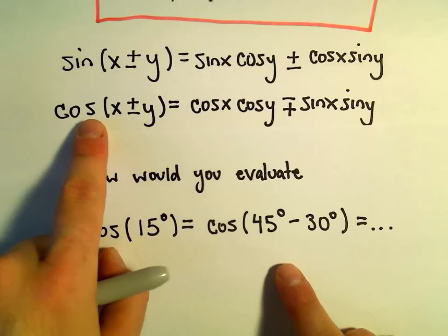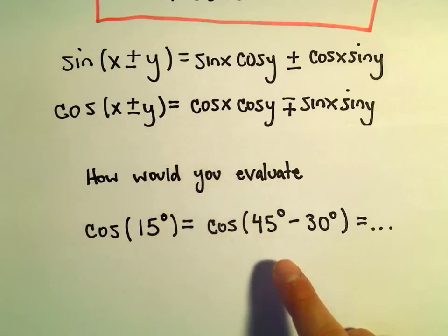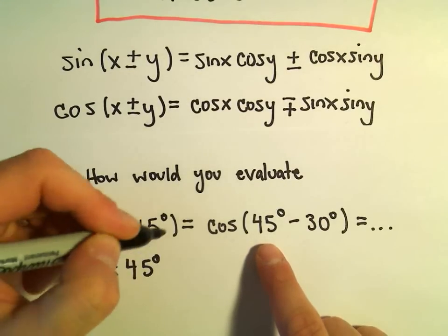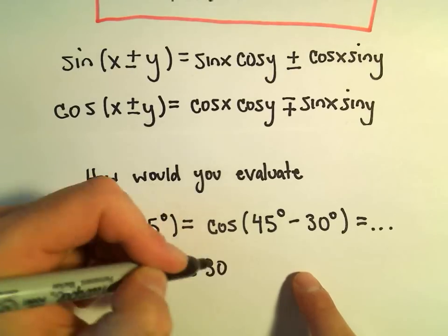And now we can use this bottom identity. So it says if you have cosine of something minus something, you take cosine of the first thing, which is 45 degrees, you multiply it by cosine of the second thing, which is 30 degrees.